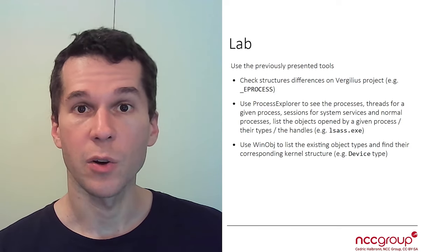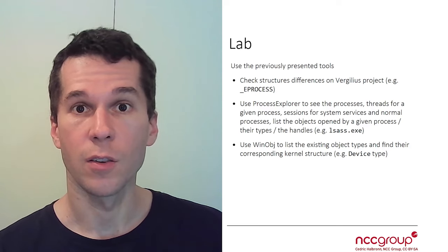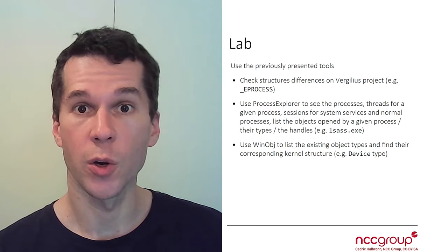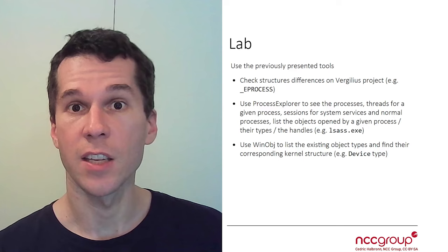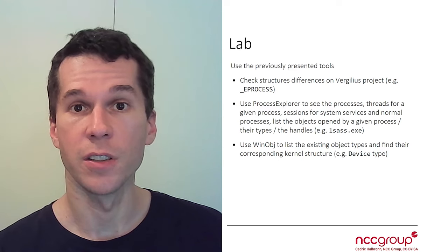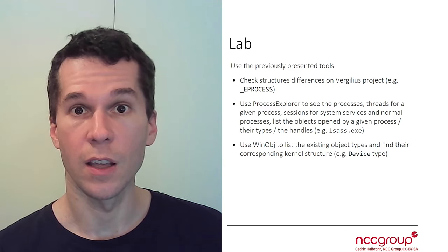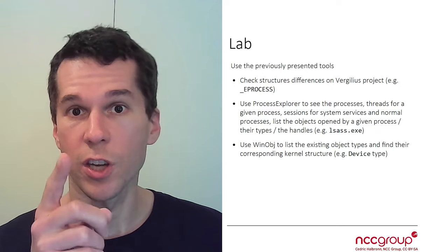Finally, you'll have to use the WinObj Sysinternals tool to find new object types that you don't know, and then find their associated kernel structure on Vergelius or in the WinDBG debugger. Okay, now it's your turn.